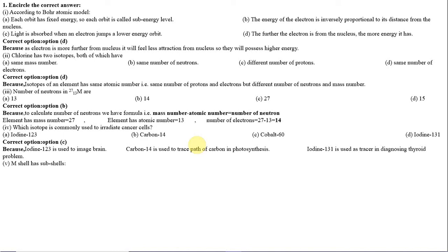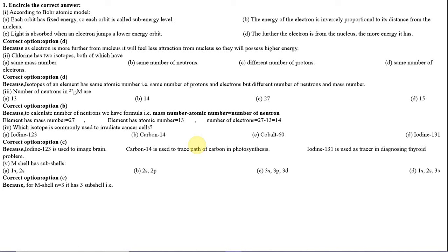Number 5: M shell has subshells. Option A: 1s, 2s. Option B: 2s, 2p. Option C: 3s, 3p, 3d. Option D: 1s, 2s, 3s. The correct option is C — 3s, 3p, 3d — because for the M shell n equals 3, and it has 3 subshells: 3s, 3p, and 3d.